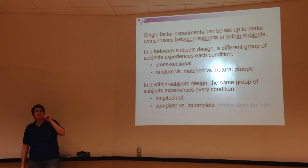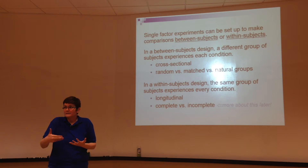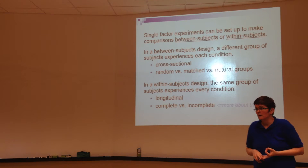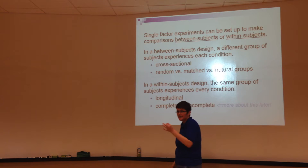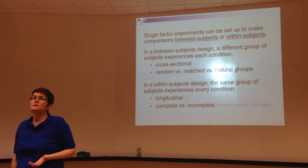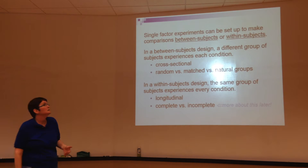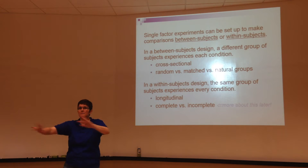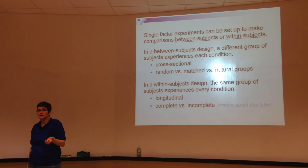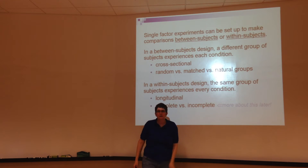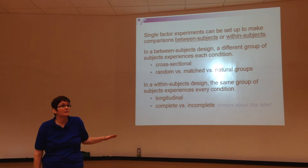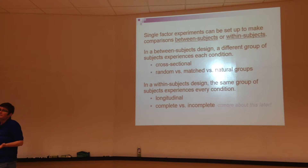Within-subjects designs can also be called related groups, dependent groups, repeated measures, or related measures. The one constant is that between-groups always means totally distinct groups of subjects are being compared, while within-subjects means the same subjects are being compared in different ways. In a between-subjects design, there are different ways it can manifest: a random groups design, a matched groups design, or a natural groups design. Random groups design gives you a true experiment, meaning you randomly assign the subjects to the group they're in, so every subject had an equal shot of being in any group.